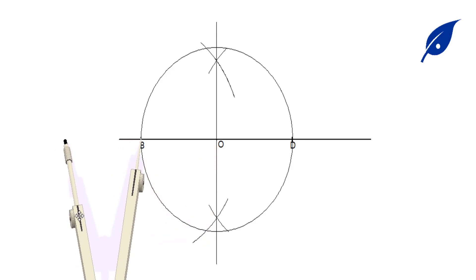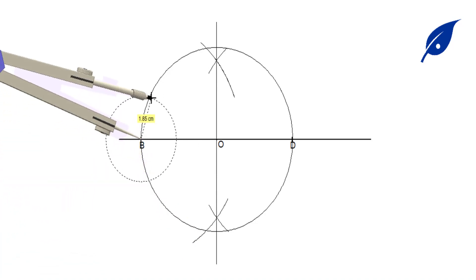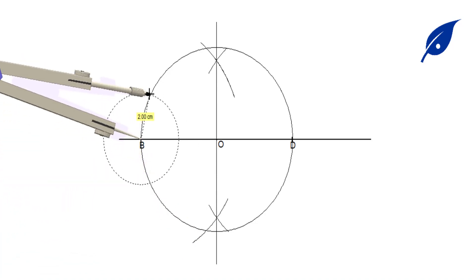With the length given to us, we'll mark a point on the circumference of the circle. I will label it C. And also at D, below the line BD, we'll label it A.